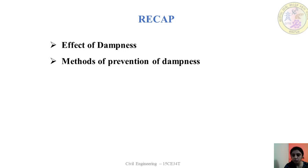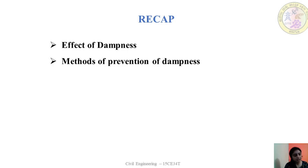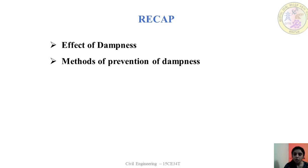The second treatment discussed was surface treatment. In surface treatment, the pores of the surface exposed to moisture are closed with the help of a water-repelling compound, by painting with it. The water-repelling compound can be in liquid form. Examples include calcium and magnesium oleate, stearates, bituminous solution, cement coating, transparent coating, painting, and distempering. A commonly used surface treatment is lime cement plaster, which is very economical.